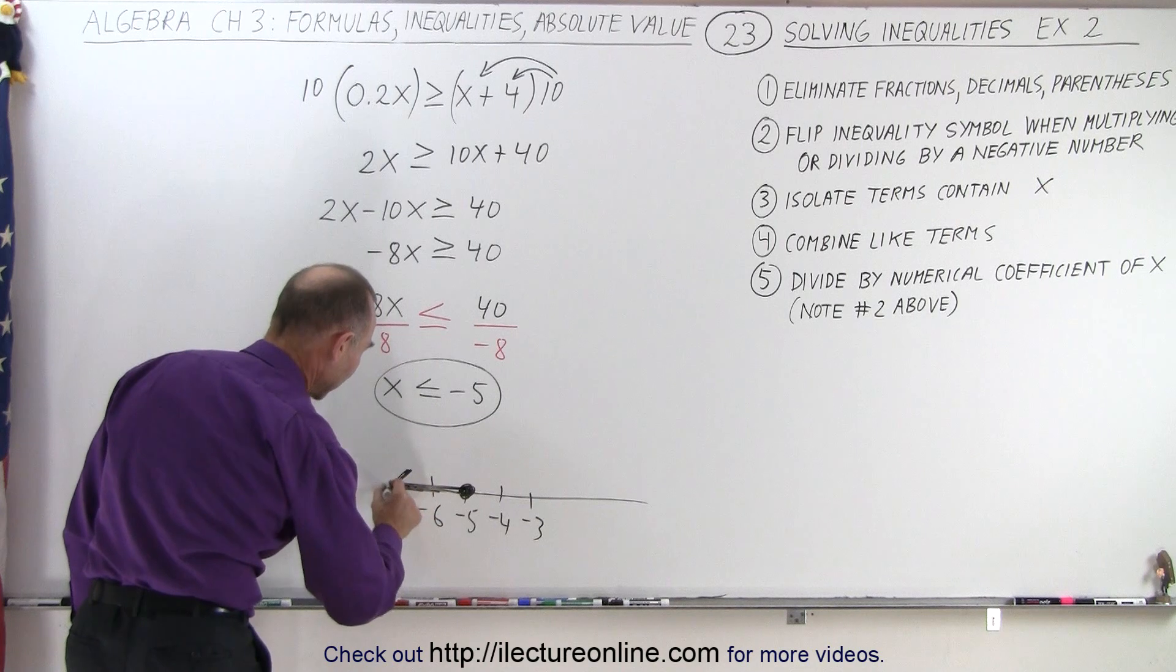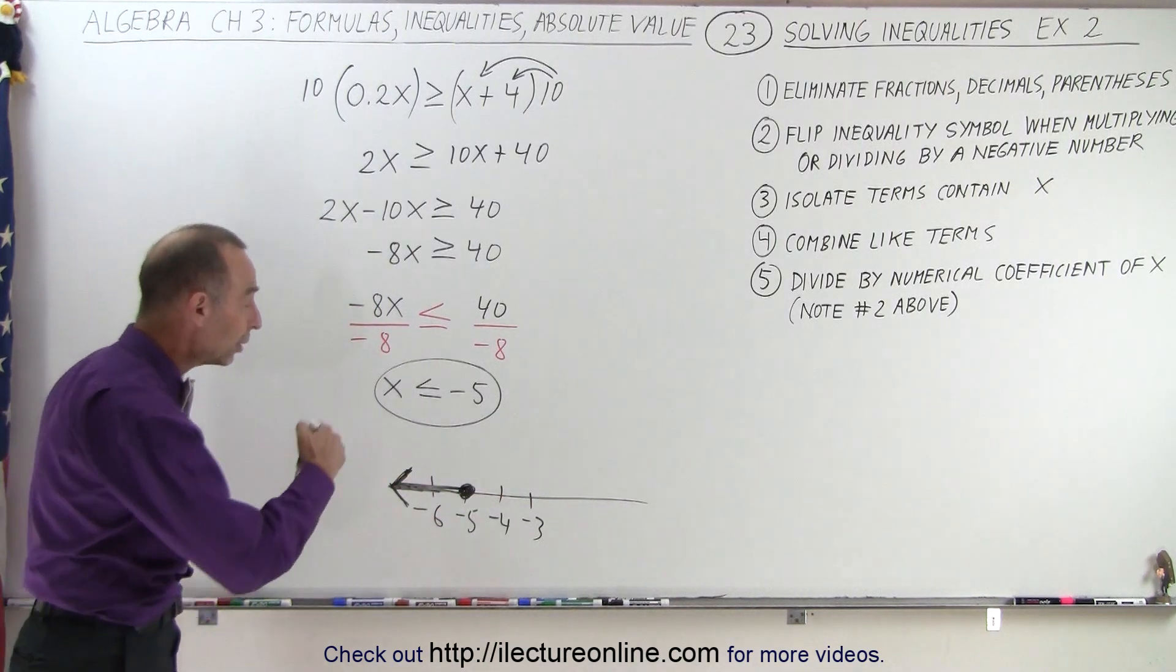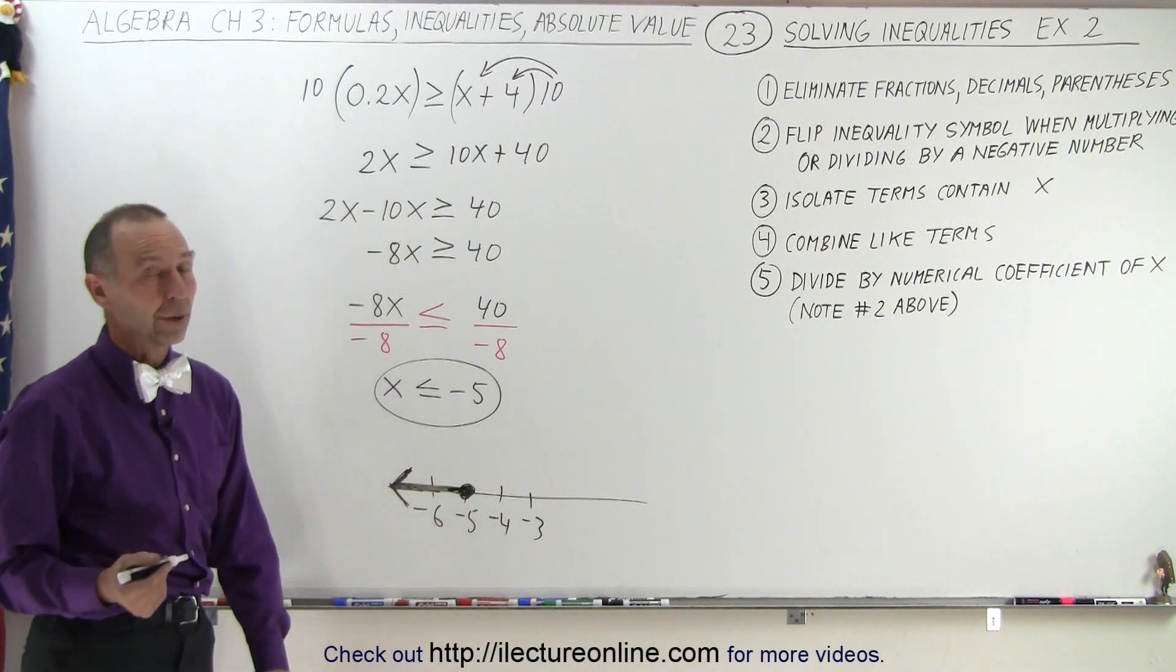And that's how you then graphically show that it's all values less than negative 5, or including negative 5, that satisfies the original inequality.